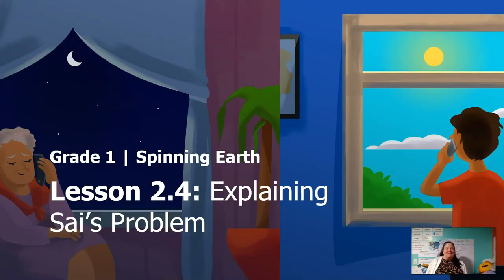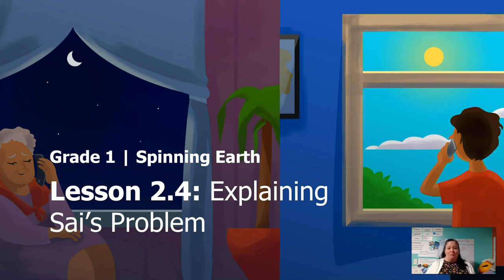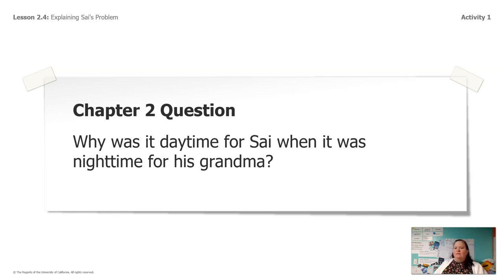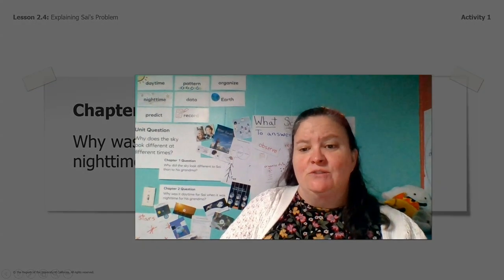Hi and welcome everybody. It's Miss Ward again and we are already at the end of chapter two and we're ready to explain Psy's problem. The chapter two question was: why was it daytime for Psy when it was nighttime for his grandma? Let's take a closer look at some of the things we did to find the answer to that question.